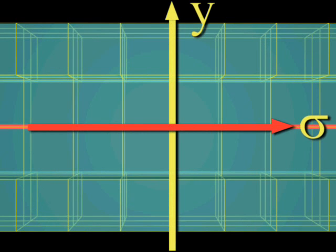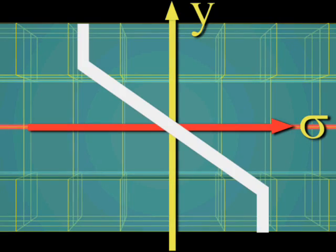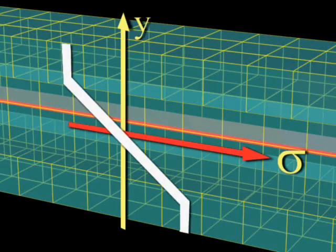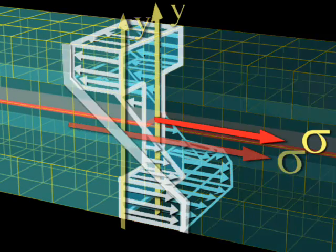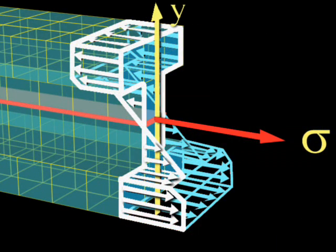The stress distribution in a beam that carries a partially plastic moment looks like this. The arrows show stress values at various locations on the cross-sectional area.